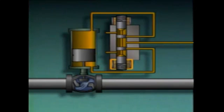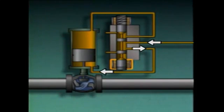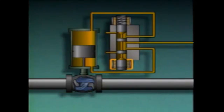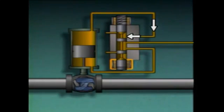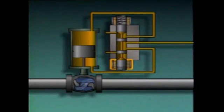When the lower solenoid is energized, the spool is pulled downward. With the spool in this position, hydraulic fluid is supplied to the actuator cylinder at the bottom, pushing the piston up and opening the valve. At the same time, fluid is forced out of the top of the cylinder, back through the pilot valve and out through the vent port to the hydraulic fluid supply.